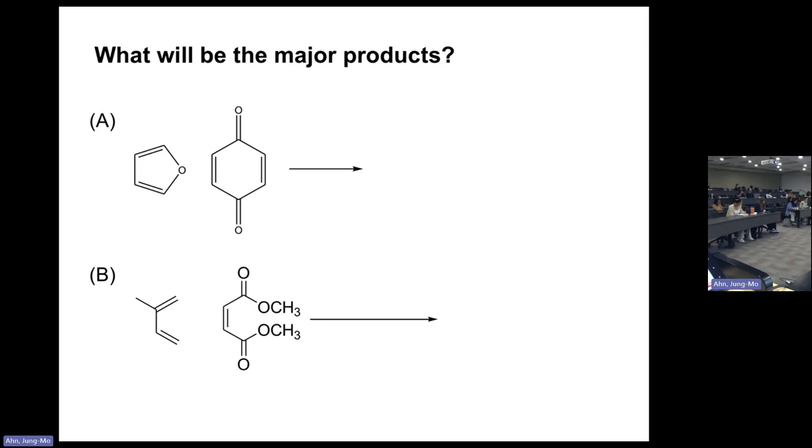What are the products you could get by making these two molecules react together? You need to identify the diene side and the dienophile side, which is the double bond with electron-withdrawing groups.